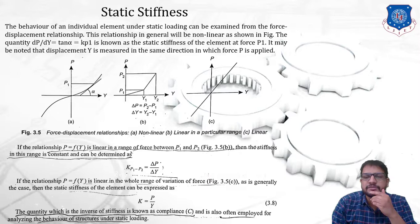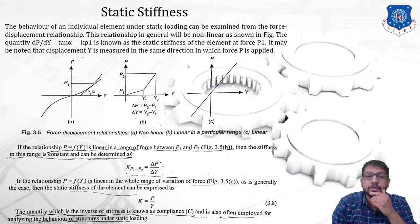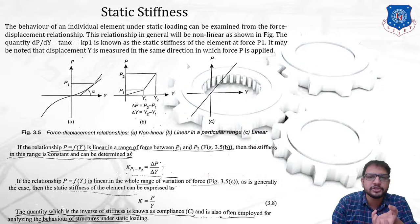Let's begin with static stiffness. As the name itself suggests, stiffness is basically resistance to deformation. Static stiffness is resistance to deformation under static loading — that is, the loading conditions when a machine is not in operation, caused by the weight of different elements.